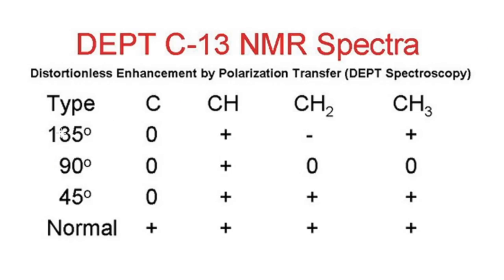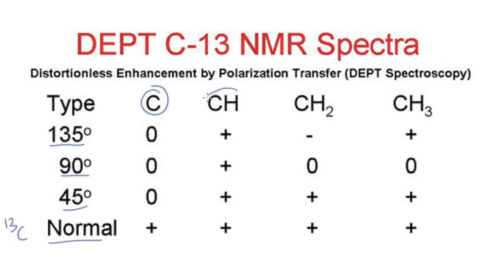This table over here summarizes all the information. It tells you what kind of signals you will get in DEPT carbon-13 NMR spectra of a given compound. These are the different DEPT types: DEPT 135, DEPT 90, DEPT 45, and normal proton-decoupled carbon-13 NMR spectra. There are different kinds of carbon: quaternary carbon, tertiary carbon (CH), secondary carbon (CH2), and primary carbon (CH3).